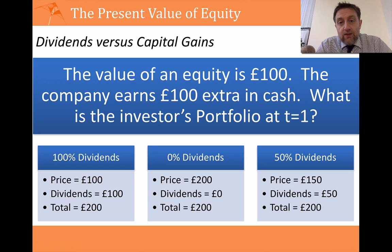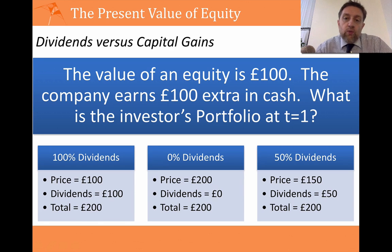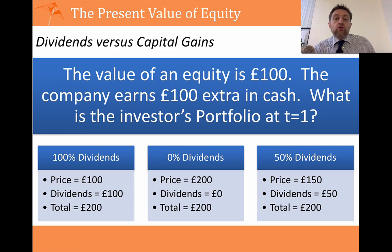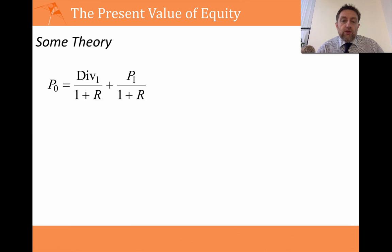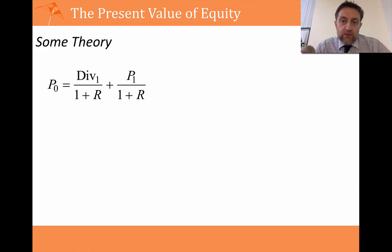Why am I asking that? Because what we're looking at is: what do you receive as an investor if you don't sell the equity? If you're just holding it, the only cash you receive year on year is the dividends. And that's what we're going to use when we look at the theory. So let's assume that you buy an equity at price at time zero — P0.